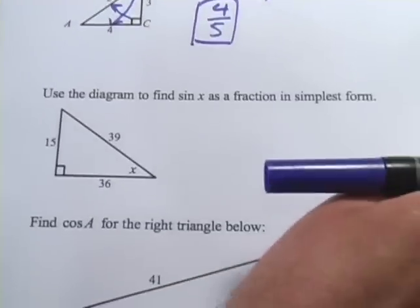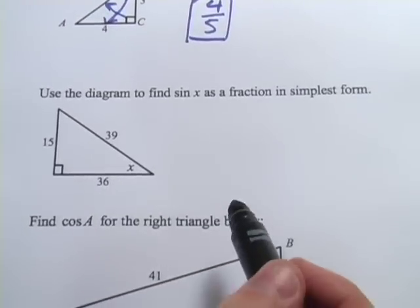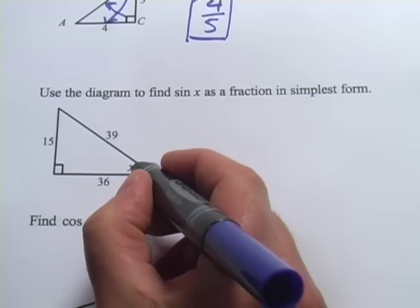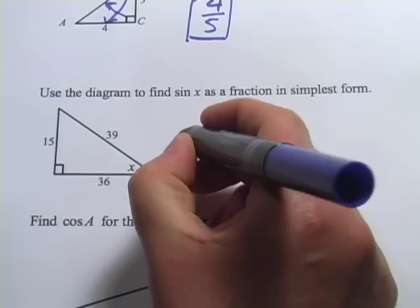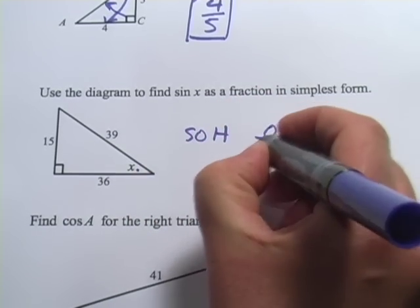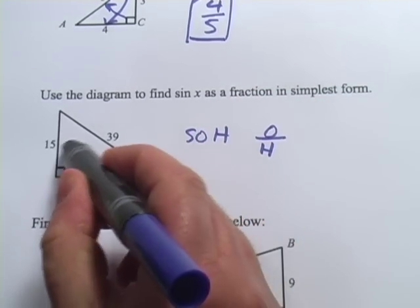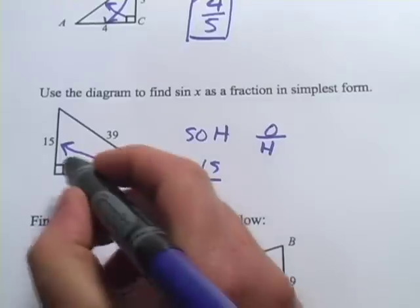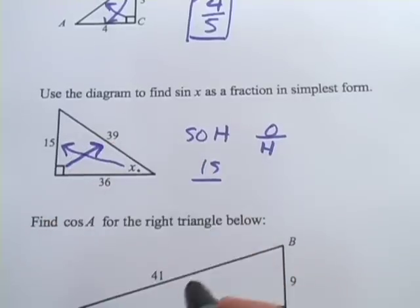Let's look at the next one. This one says use the diagram to find sine X as a fraction in simplest form. So here's our angle X right here. Well, sine, it's the SOH in SOHCAHTOA, so it's opposite over hypotenuse. Well, opposite X is 15. And the hypotenuse of this triangle is opposite the 90-degree angle. That's 39.